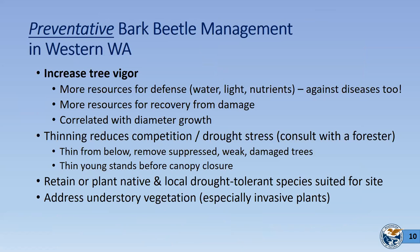I want to front-load this: for bark beetle management in both eastern and western Washington, prevention is what we want to emphasize. Tree vigor is key — anything you can do to give trees more room to grow and more access to resources used for defense. Vigorous trees can defend against attack, recover from minor damage, or flush small infestations with defensive chemicals.